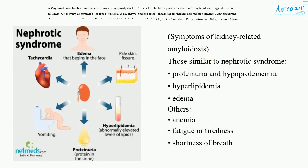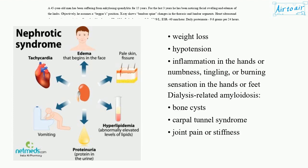Symptoms of kidney-related amyloidosis: those similar to nephrotic syndrome — proteinuria, hypoproteinemia, hyperlipidemia, edema. Others include anemia, fatigue or tiredness, shortness of breath, weight loss, hypotension, inflammation in the hands or numbness, tingling, or burning sensation in the hands or feet.